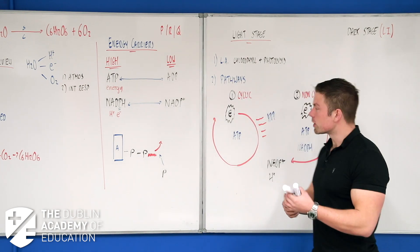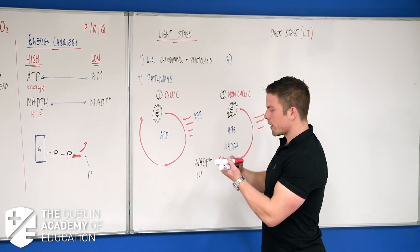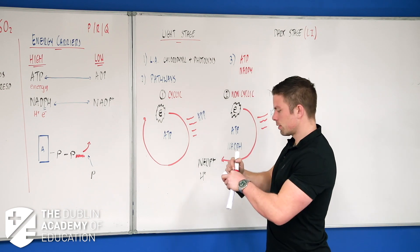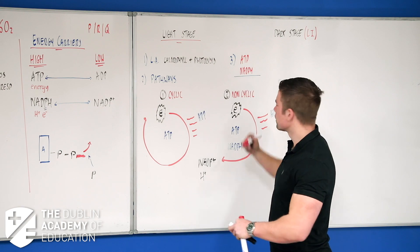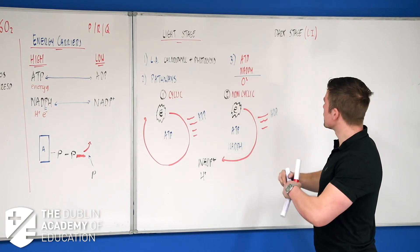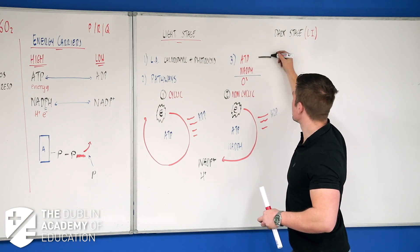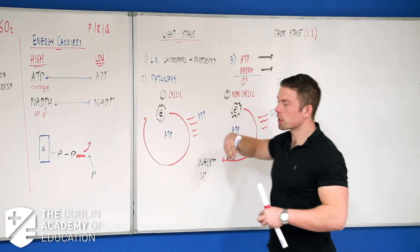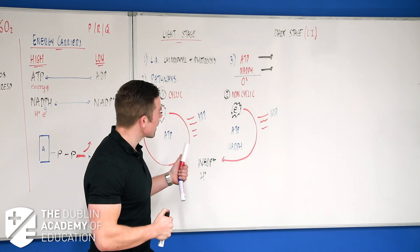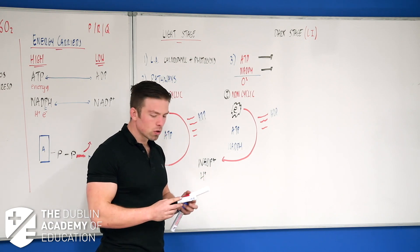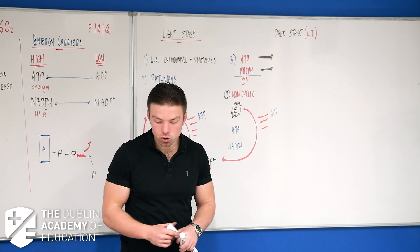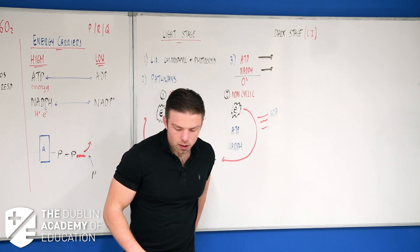That gives us three products of the light stage: ATP, NADPH, and oxygen. The oxygen comes from photolysis and goes into the atmosphere or is kept for internal respiration. The ATP and NADPH transfer over to the dark stage. If they ask where photolysis or oxygen-splitting occurs, say pathway two — non-cyclic.